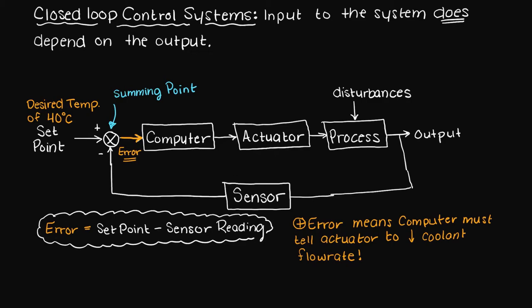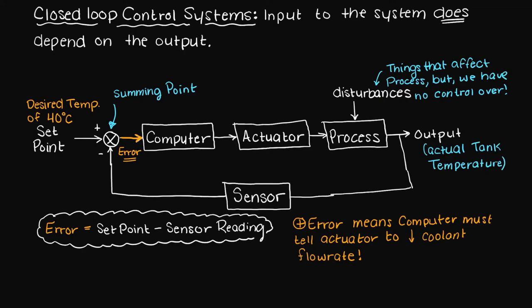Lastly, the process block is the actual process that is occurring plus any disturbances. Remember our disturbances are things that affect our process but we have no control on them. The output of the process block is what is sent to the sensor for the feedback loop and is the actual output that we would read on a thermocouple.